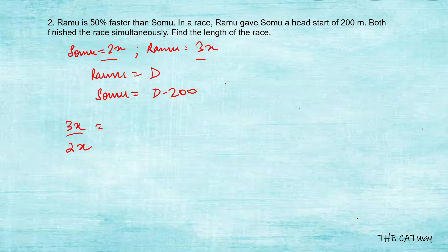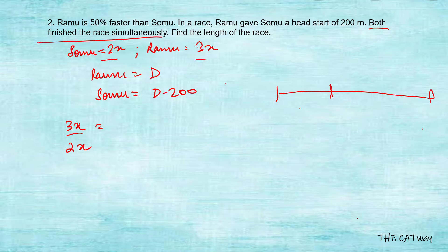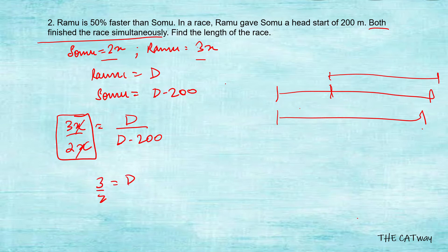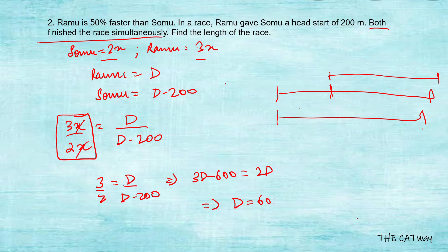Since both finish the race simultaneously, the time is constant. The time taken by Somu from the 200-meter mark to the end equals the time taken by Ramu from start to end. With time constant, ratio of speed equals ratio of distance: 3 by 2 equals D by D minus 200. Solving: 3D minus 600 equals 2D, so D equals 600 meters. Question two is complete.